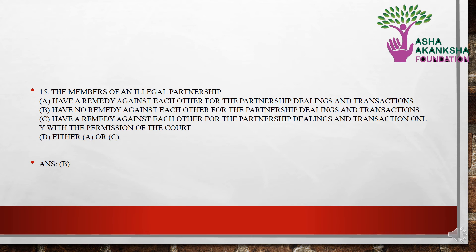The next question is: the members of an illegal partnership — (a) have a remedy against each other for partnership dealings in transactions, (b) have no remedy against each other for the partnership dealings in transactions, (c) have a remedy against each other for partnership dealings in transactions only with the permission of the court, or (d) either A or C. The correct answer is option B — the members of the illegal partnership have no remedy against each other for the partnership dealings and transactions.